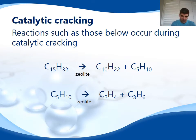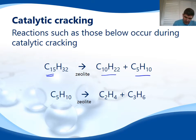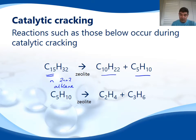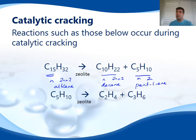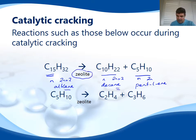During the process of catalytic cracking, we find a large molecule like a carbon-15 molecule being cracked into smaller ones — say, carbon-10 and a carbon-5. Notice the ratio here: if we call the 15 N, then H is 2N+2, so this is an alkane. The same ratio occurs for the decane, so this is 2N+2, which is decane. But the ratio for our second compound is N to 2N, so this must be pentene — pent-1-ene. So when we crack our long chain hydrocarbon using the zeolite catalyst, we get an alkane and an alkene.